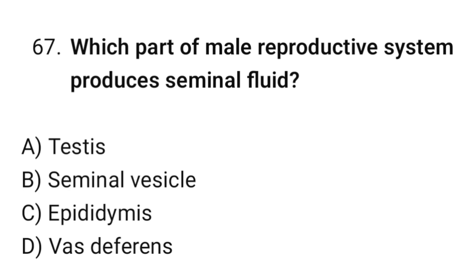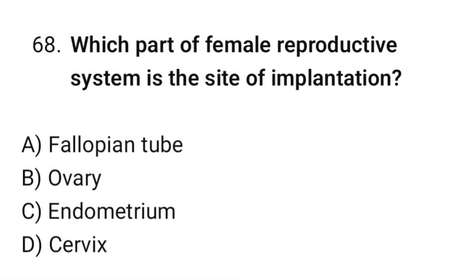Question No. 67: Which part of the male reproductive system produces seminal fluid? The correct option is B. Seminal vesicles. Question No. 68: Which part of the female reproductive system is the site of implantation? The correct option is C. Endometrium.